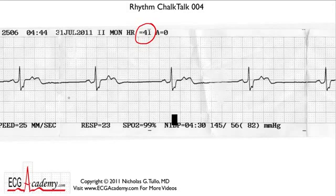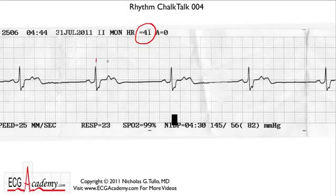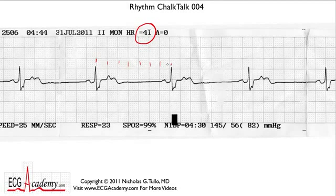You look at the tracing and the QRS complexes certainly seem to be regular. If you measure the rate starting at this heavy line and count off 300, 150, 100, 75, 60, 50 — it is about 40 beats per minute or so. That's pretty accurate.